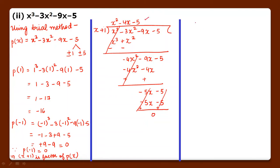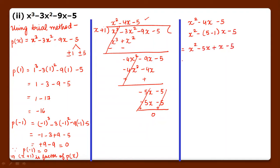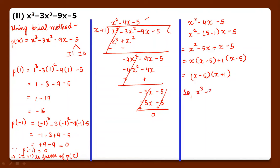We have obtained the quadratic polynomial x square minus 4x minus 5. We check factors of 5: 1 into 5, and 5 minus 1 = 4. So we can split middle term as minus 5 plus 1. Taking x minus 5 common gives (x minus 5), and taking x plus 1 common gives (x plus 1). So we have got two more factors.